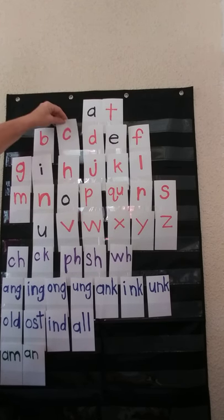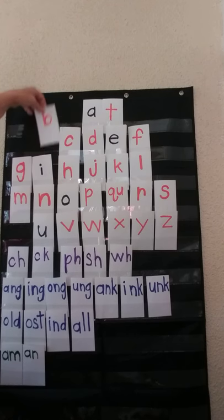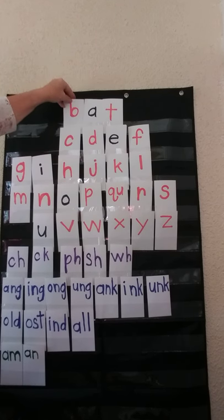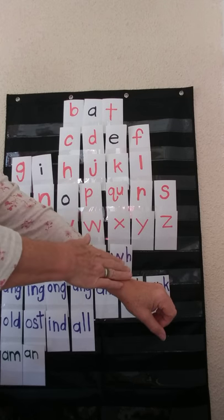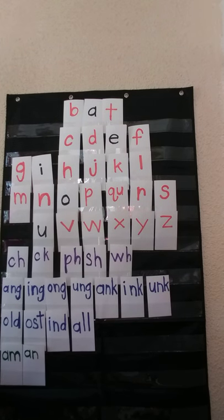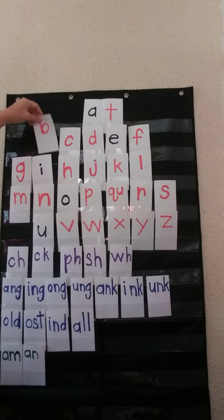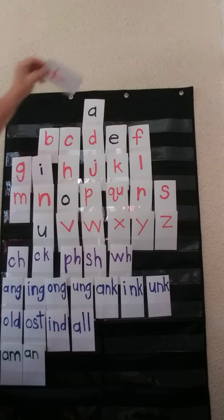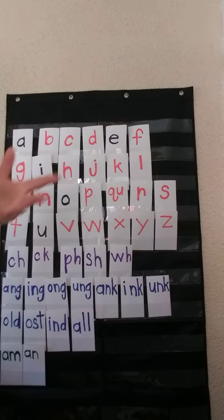I can say, 'Put the C back.' Now find the letter that says this sound — B. Yes, it is B. Put the B up here. Now let's tap this one out: B, ah, T — bat. Let's put the B back, put the T back, and put the A back. So that's how you would do closed words — just three-letter words.